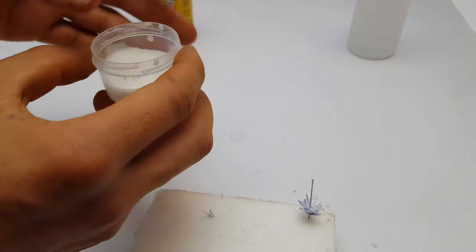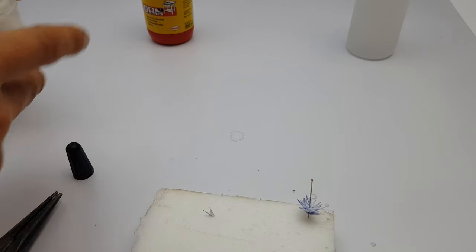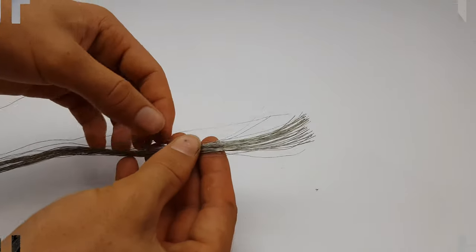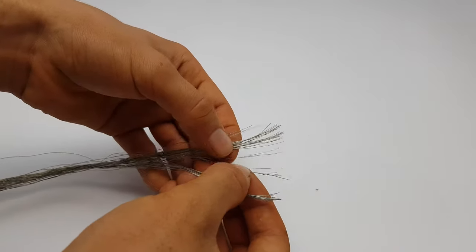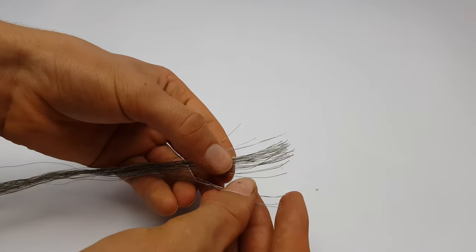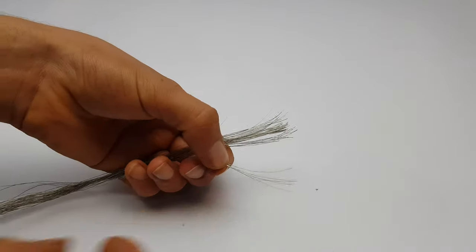Now while you are waiting for the leaves to dry you can basically start making the flowers of the aloe. The flowers are made using 0.3 millimeter steel wire. I take five wires and cut them to about two and a half centimeters.